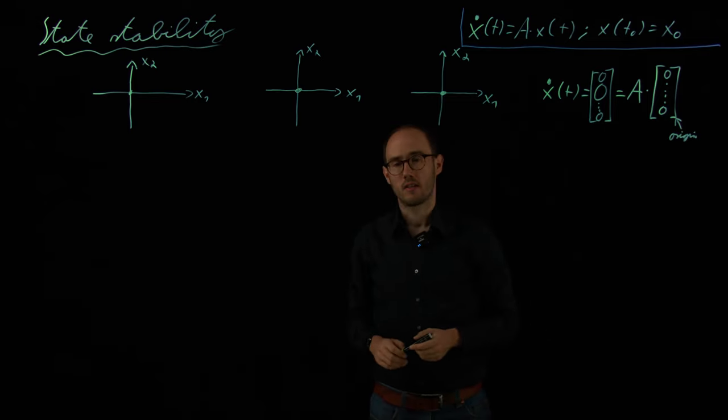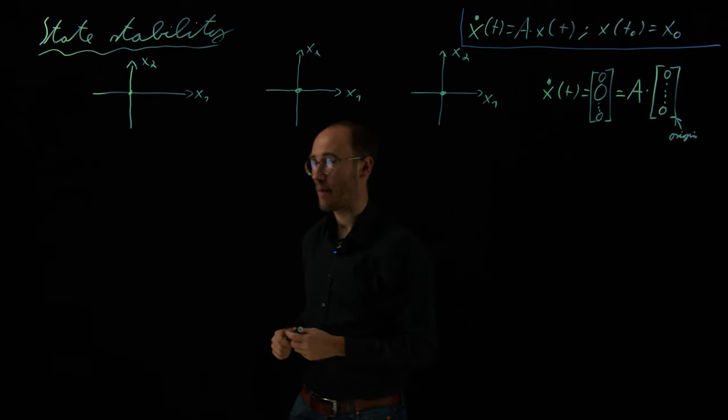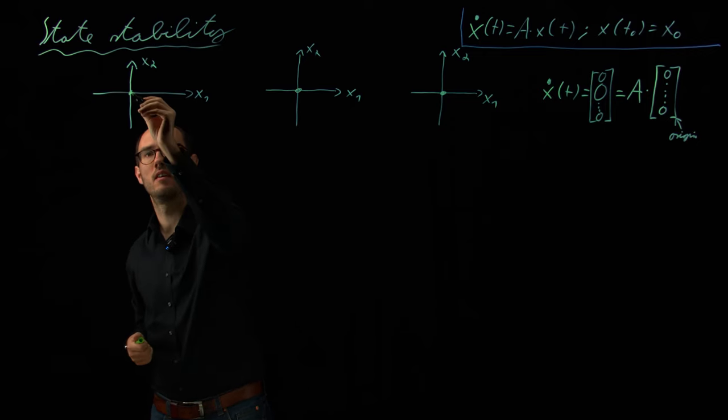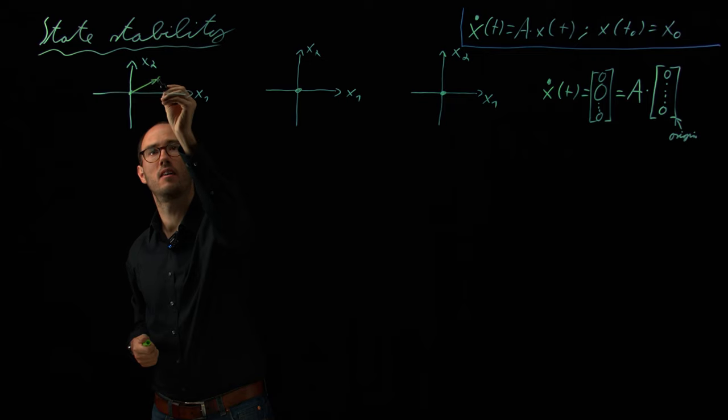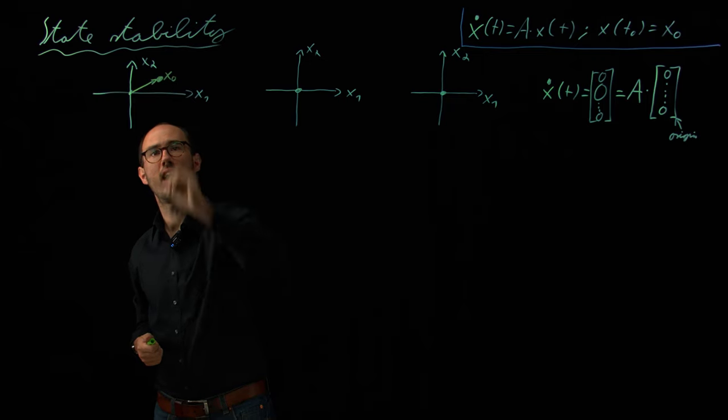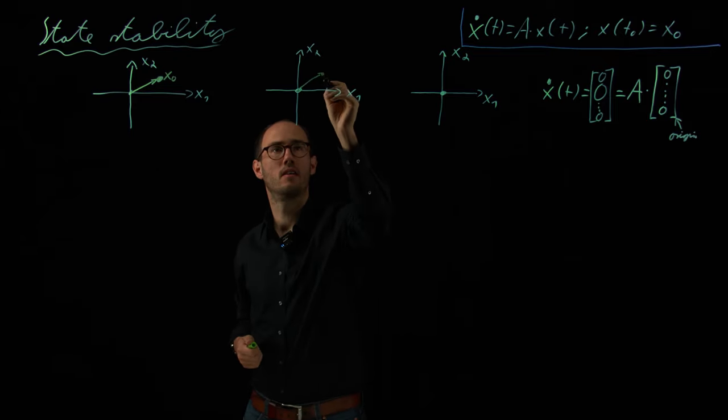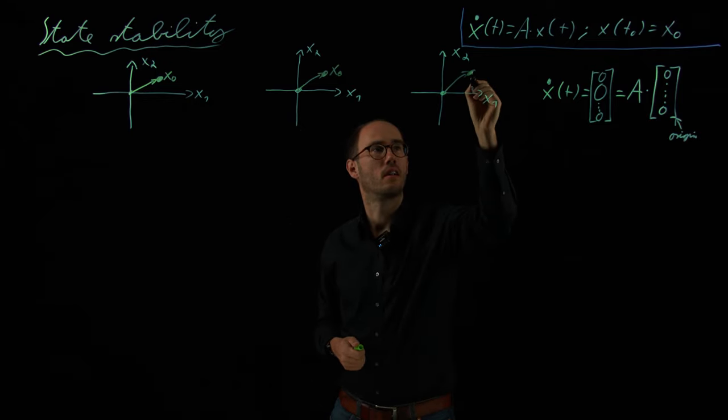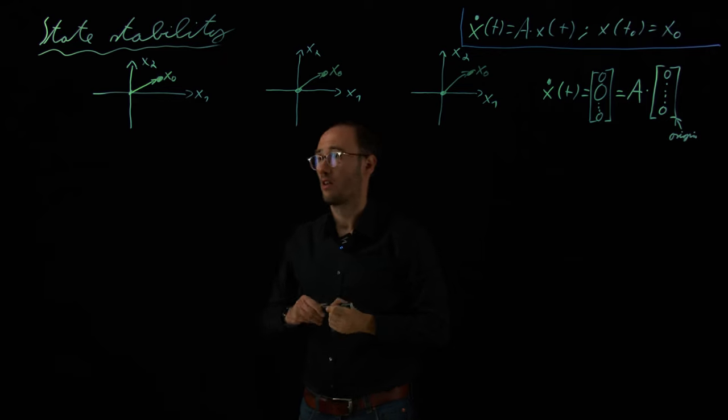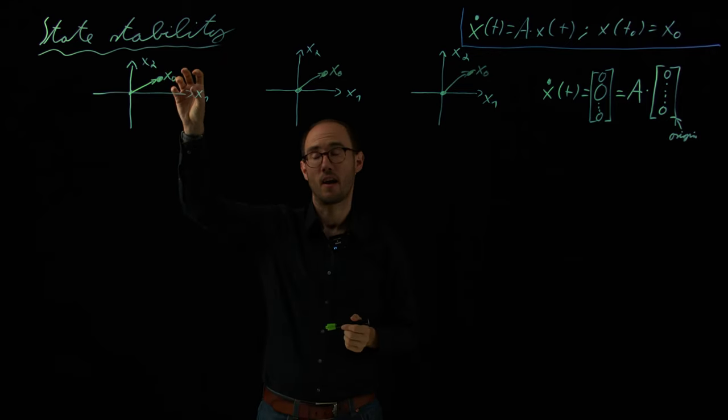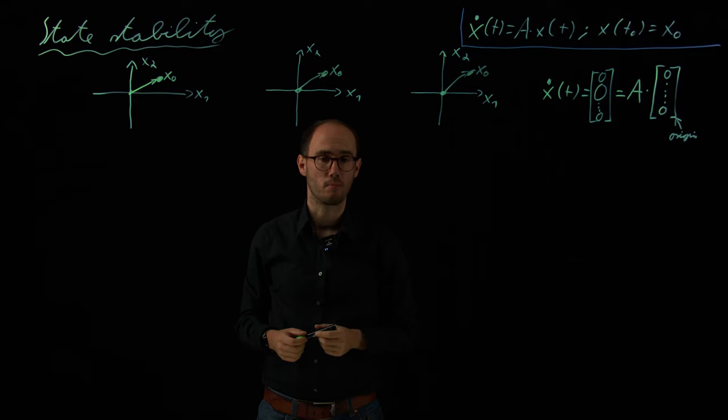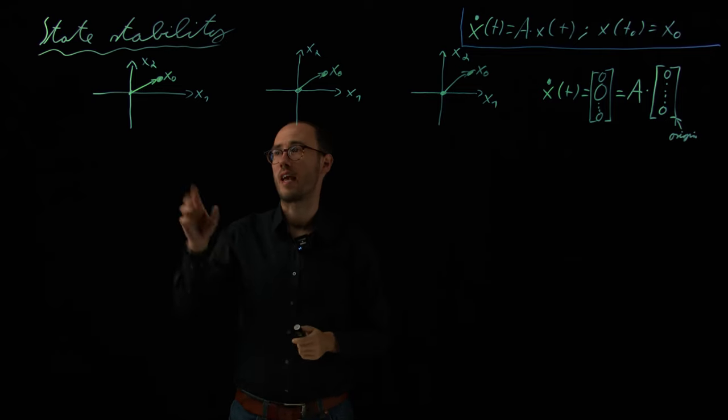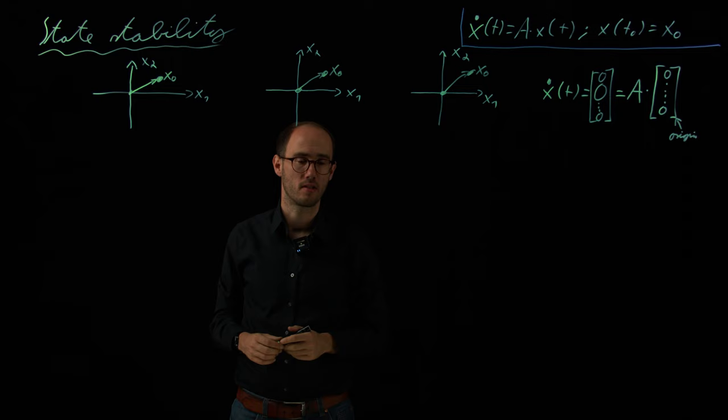Therefore, the origin of our state space, so this here in the middle, this is so-called equilibrium, because if we are in the origin, the right-hand side here will become zero, and there will be no change of the state over time anymore, and therefore, this point will stay constant. The question regarding state stability is now, what happens if I perturbate this equilibrium point a little bit? So what is happening if I take x zero out of this equilibrium, like in these three cases?